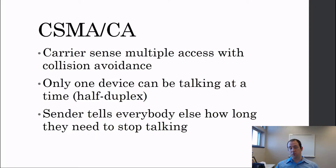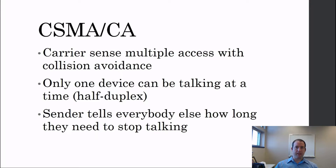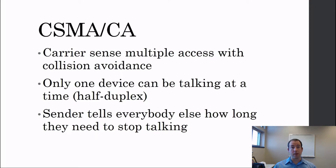When you transmit, you tell everybody: I'm going to be talking for a couple of microseconds, so nobody talk while I'm talking, and then you can pick up when I stop. They all take turns that way. They do the same kind of listening that Ethernet does — carrier sense multiple access — they're listening on the network first, but we can't do collision detection because we can't listen while we're transmitting.